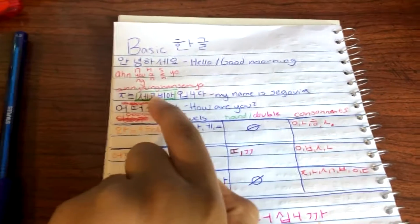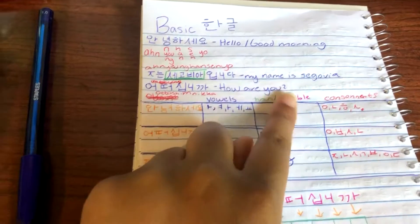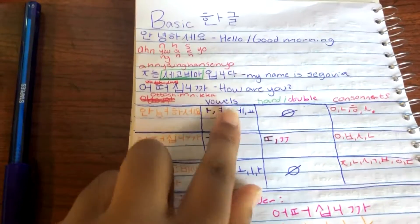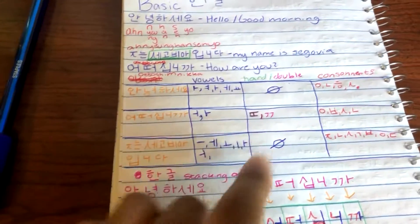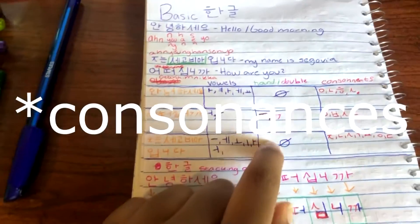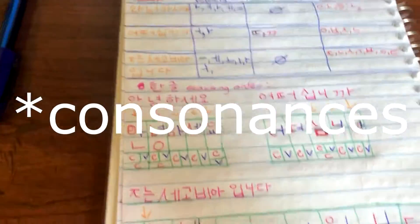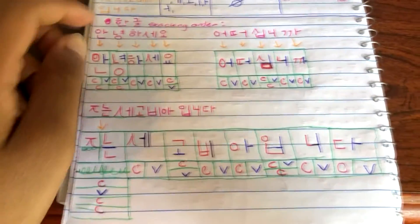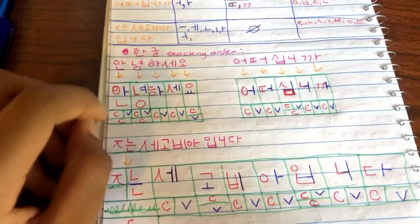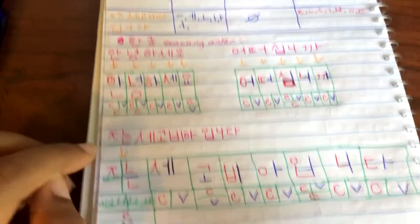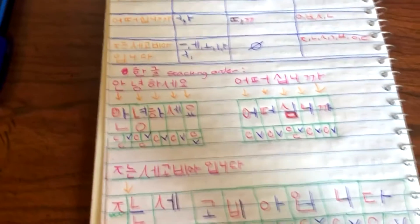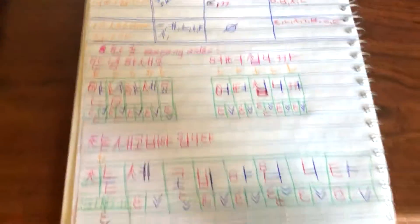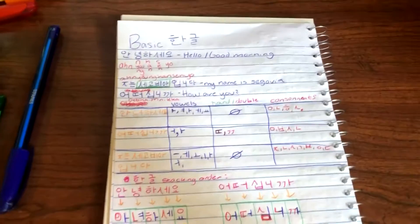Then 'Choneun Segovia imnida' — 'Hello, my name is Segovia' — and 'eotteoke jinaeseyo,' which means 'how are you.' What I did was take these words, write them down, and break down the vowels, hard/double vowels, and consonants. I also worked on the stacking order — I took each syllable and broke down the stacking order so I could understand it better. That really, really helped. I'm still just trying to remember where all the letters go, but I wanted to show you the idea of what I'm getting at.